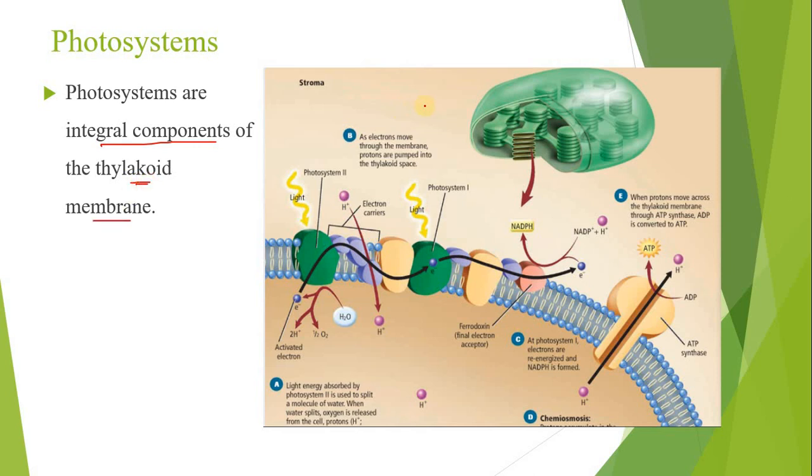This is chloroplast. These coin-like structures are actually thylakoid membranes. And if we look into details of one thylakoid membrane, the outer space of the thylakoid membrane is called stroma and the inner space is called lumen.